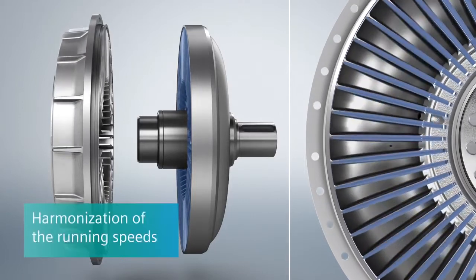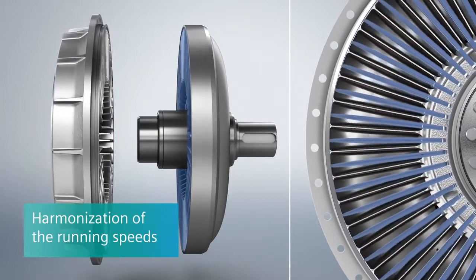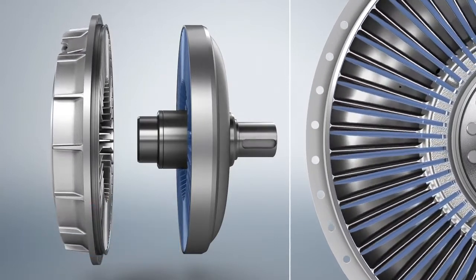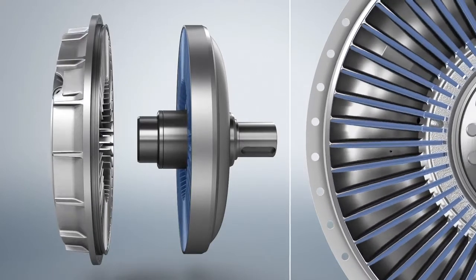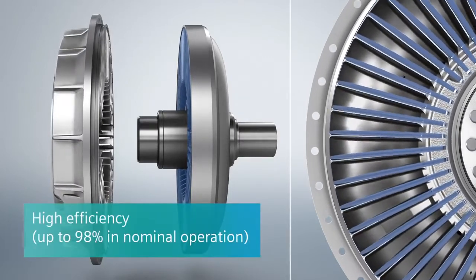Once nominal operation is reached, for functional reasons, there continues to be a slight difference in the rotation speed between the pump wheel and the turbine wheel. The Fludex fluid coupling generally achieves an efficiency of up to 98%.